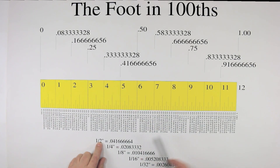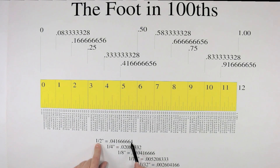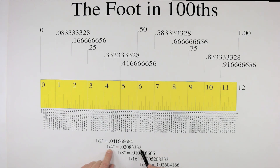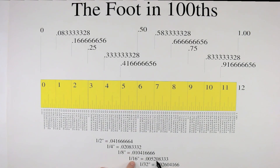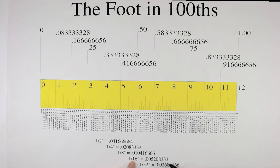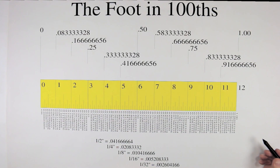If we take an inch and divide it by two, we have one half inch at 0.041666. Divide a half inch by two and we get one quarter inch, which is 0.020833. Divide a quarter inch by two and we get one eighth inch, which is 0.010416. Divide an eighth inch by two and we get one sixteenth inch at 0.005208. Divide one sixteenth by two and we get one thirty-second, which is 0.002604. Divide one thirty-second by two and we get one sixty-fourth, which is 0.001302.